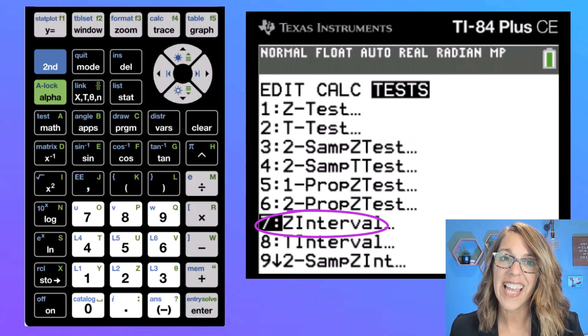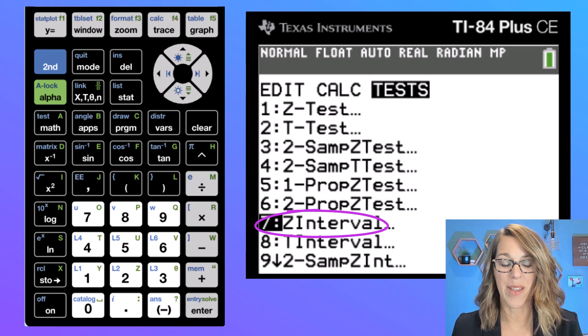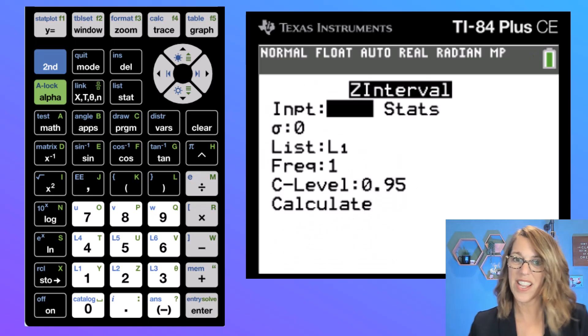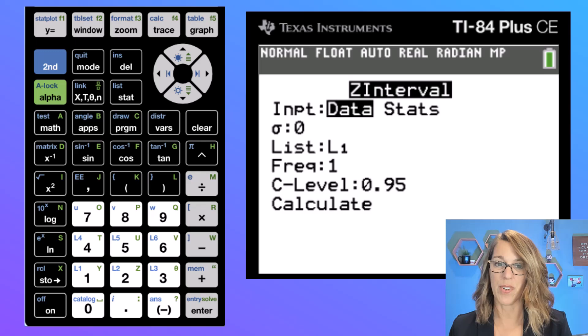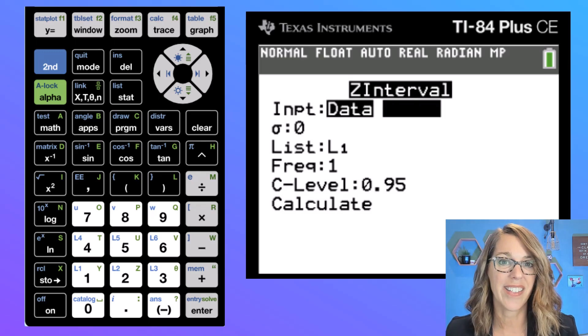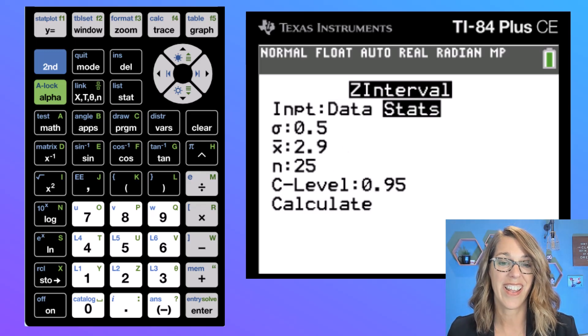So back to our calculator, let's choose number seven. And I'm there, so I'm going to hit enter. I don't want to enter data here, I already have these stats computed. So I'm going to arrow over to stats to make sure that stats is highlighted. And it's going to start to prompt me for all of those things.